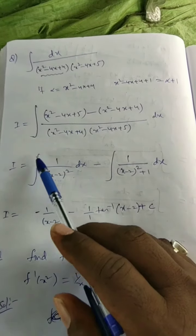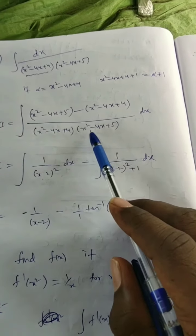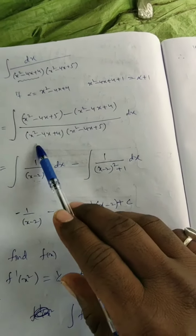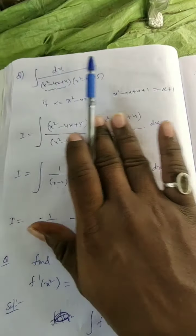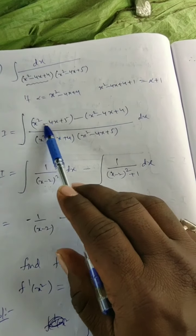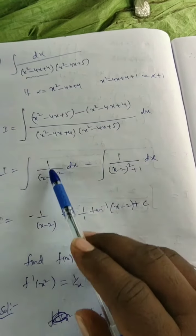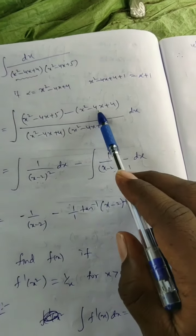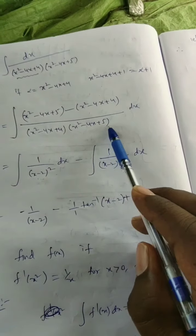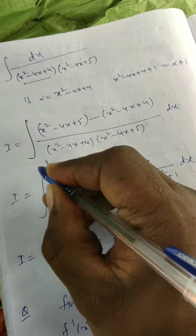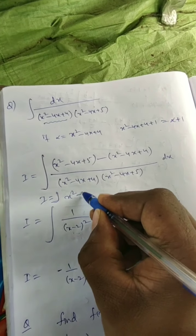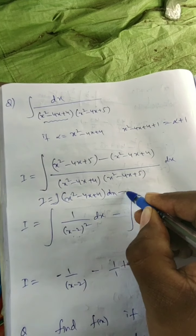Separating the fraction: I = ∫[x² - 4x + 5] / [(x² - 4x + 4)(x² - 4x + 5)] dx − ∫[x² - 4x + 4] / [(x² - 4x + 4)(x² - 4x + 5)] dx. In the first term, (x² - 4x + 5) cancels, leaving 1/(x² - 4x + 4). In the second term, (x² - 4x + 4) cancels, leaving 1/(x² - 4x + 5).